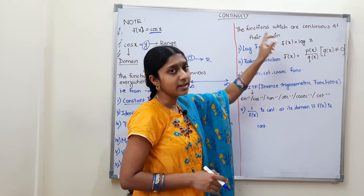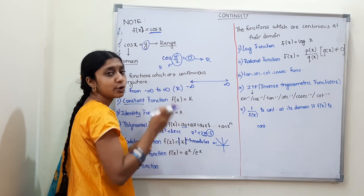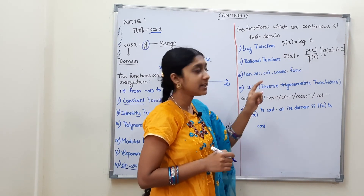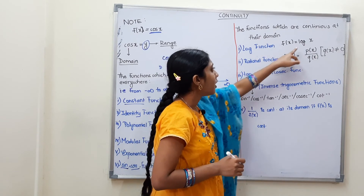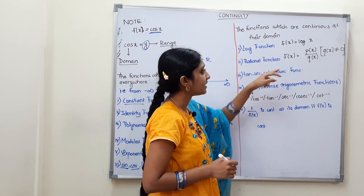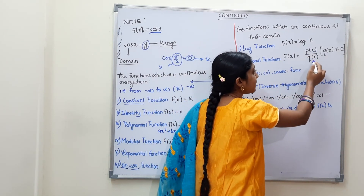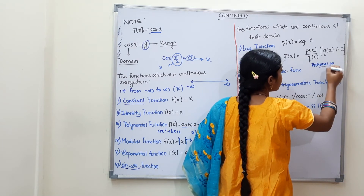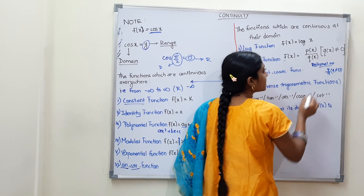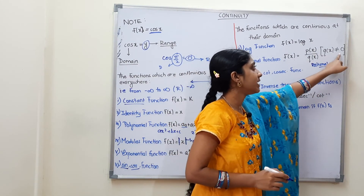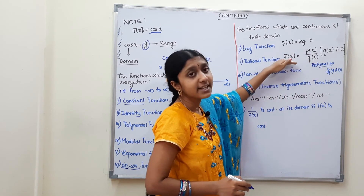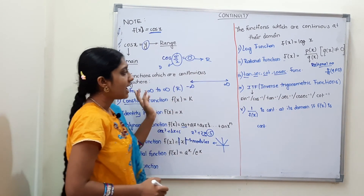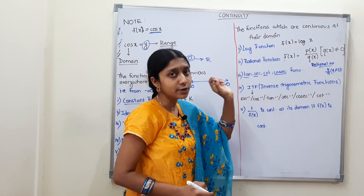Next, functions which are continuous over their domain. First: logarithmic function, f(x) = log x — continuous at its domain. Second: rational function, f(x) = p(x)/q(x), where q(x) ≠ 0 — continuous at its domain. Third: tan, secant, and cosecant functions — unlike sine and cosine which are continuous everywhere, these are continuous only at their domain.